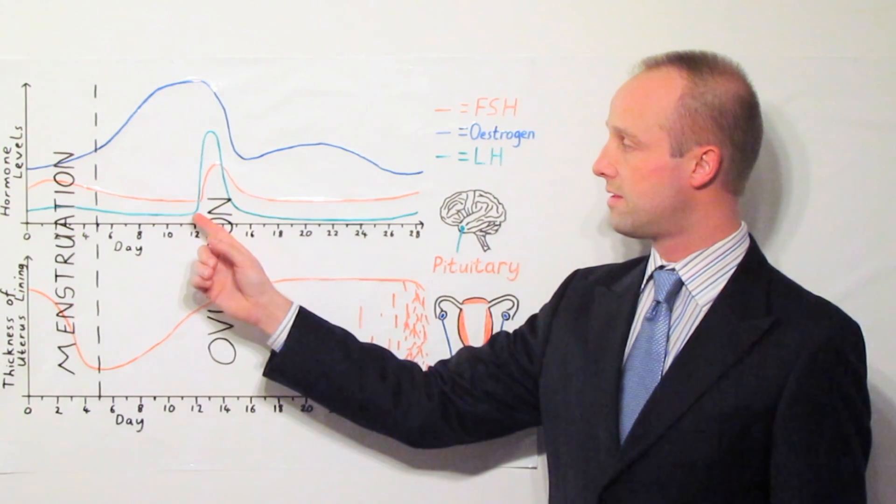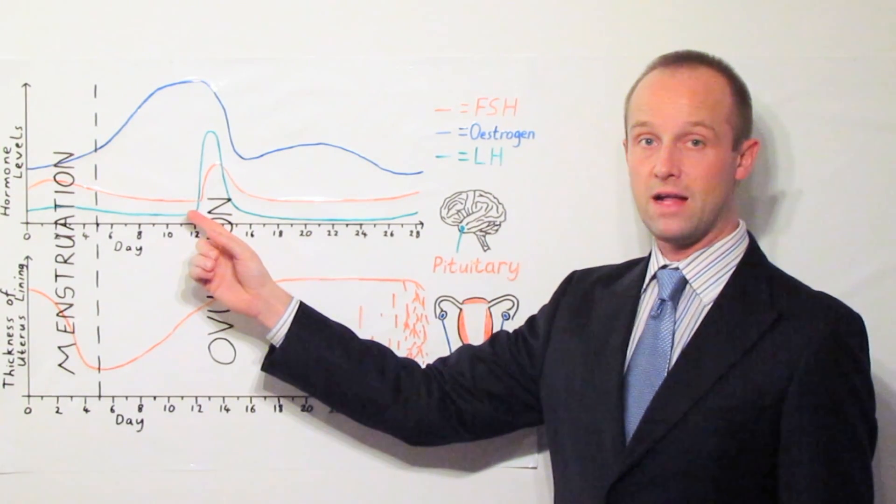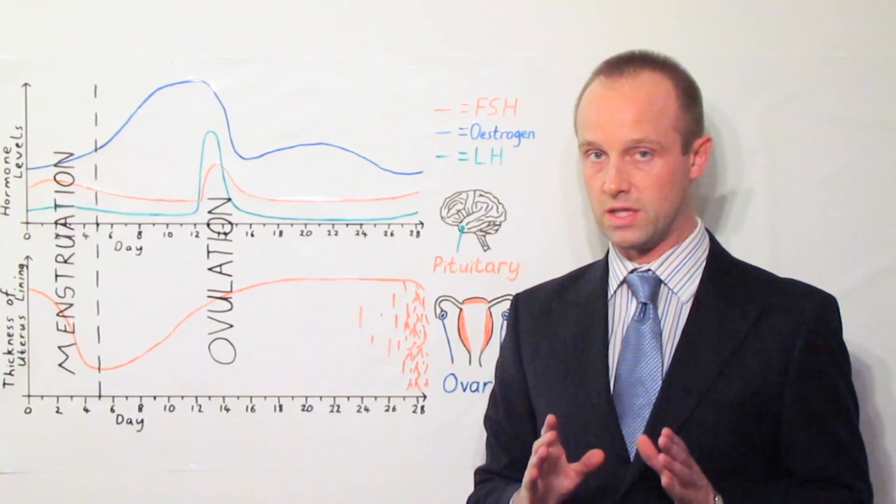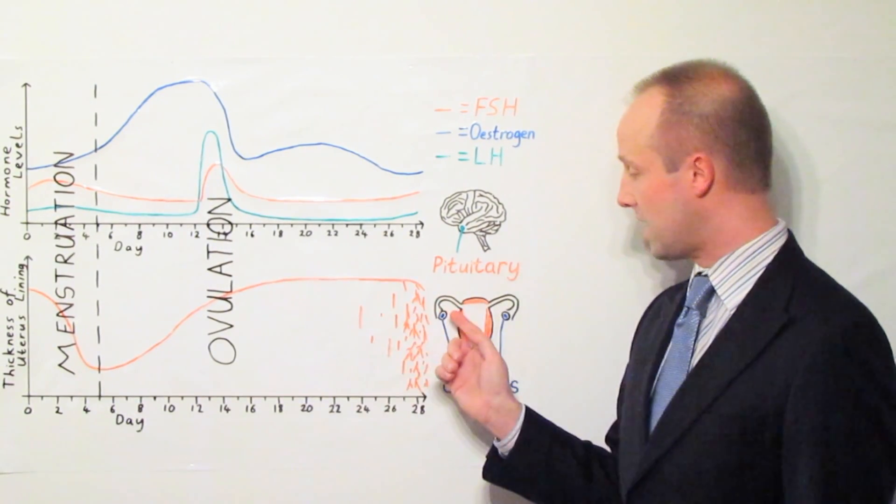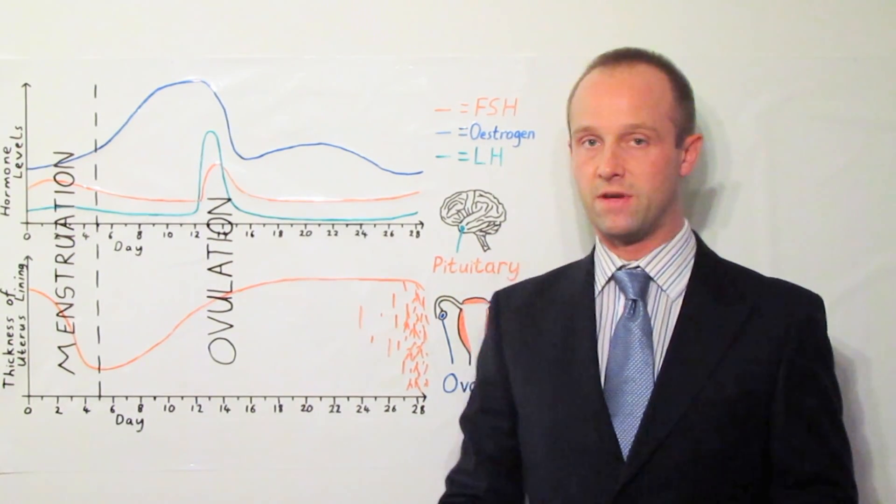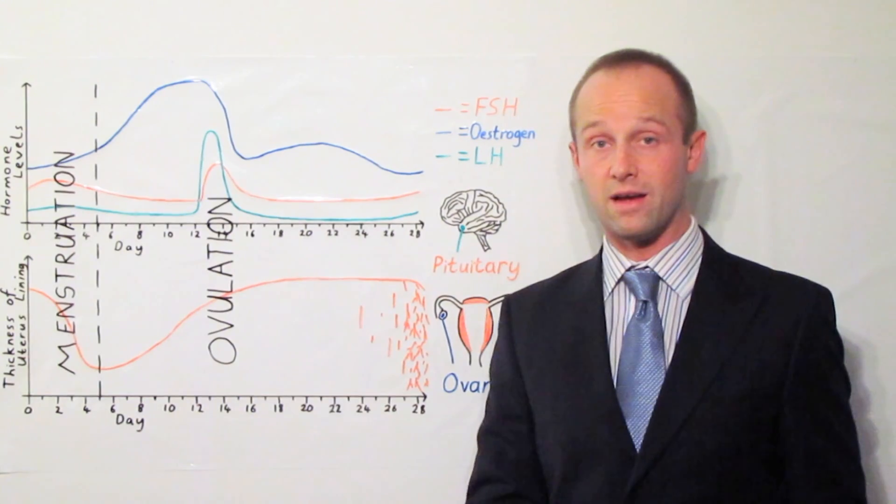Then around about the middle of the month, the level of LH suddenly jumps up and that's the period that we call ovulation. That's when an egg is released and it comes out of whichever ovary we're dealing with. If it's then fertilized, it can then embed in the lining of the uterus.